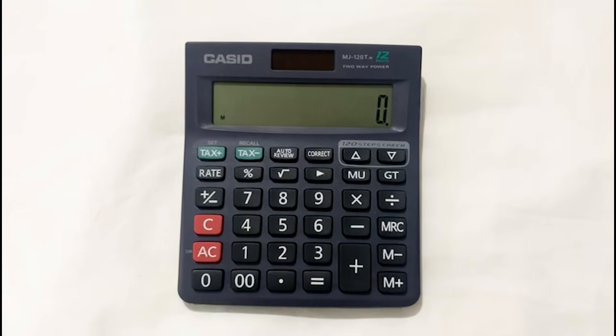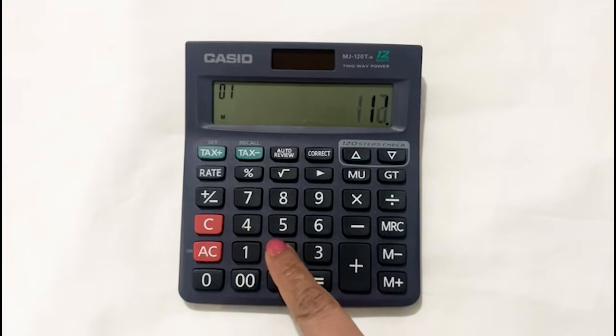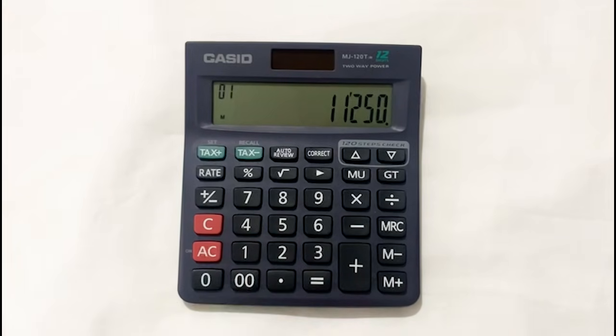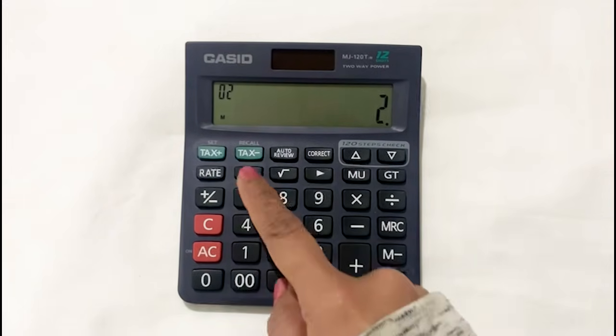price of that item is 11,250. You want to know what is the final price after 2% off. So in the first step, we will multiply it with 2. Then in the next step, we will press the percentage button.